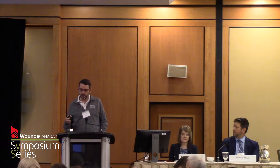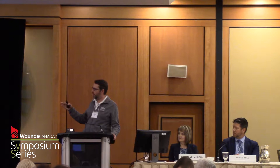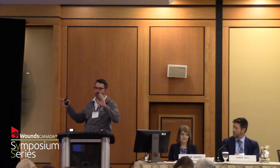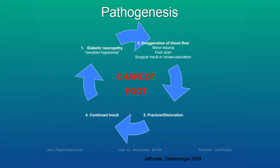To recap the pathogenesis — and we heard a nice synopsis of a more modern theory with RANKL and OPG from one of the speakers this morning — in a more rudimentary fashion, there was the French neurovascular theory and the German neurotraumatic theory. We really accept both theories together now. It's a combination of denervation, autonomic denervation, and trauma leading to a cycle of repetitive trauma causing dislocation in the Charcot foot.